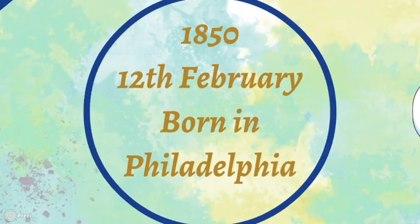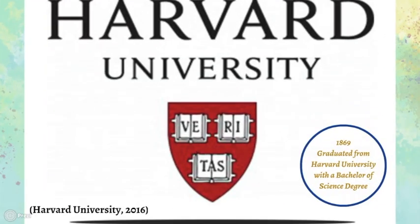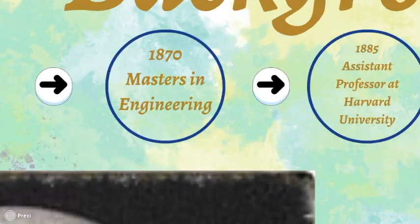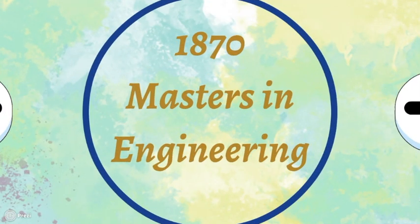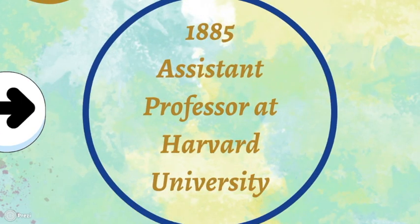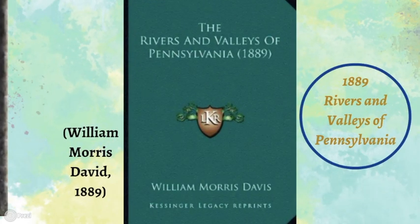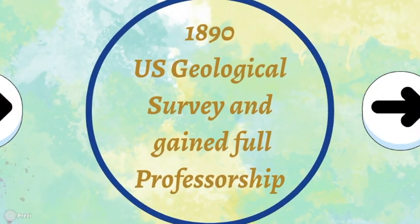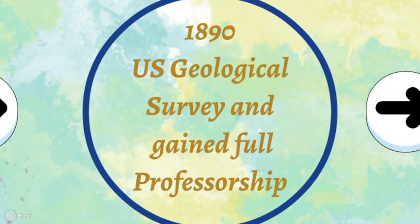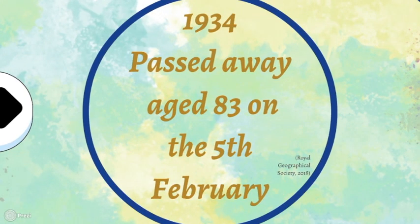William Morris Davis was born in 1815 Philadelphia. Davis later earned a Bachelor of Science degree at Harvard University in 1869 and later a Masters of Engineering in 1870. In 1885, Davis was appointed Assistant Professor of Physical Geography at Harvard. In 1889 he published Rivers of Pennsylvania, which contains a cycle of erosion theory, and later published Geographical Essays in 1909. Davis passed away aged 83 in 1934.